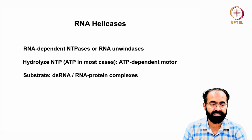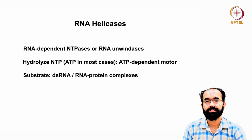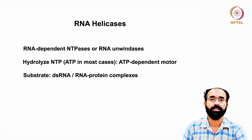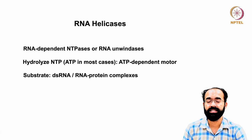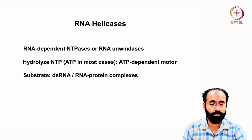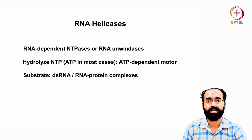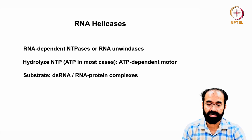RNA-dependent NTPases, or RNA unwindases — the word unwinding gives you an idea that RNA needs to undergo a change in its secondary structure. Sometimes this change is important for it to acquire another secondary structure or get interaction with another RNA. Certain sequences in the RNA that are buried inside the secondary structure need to be exposed, and that function is done by helicases. They hydrolyze NTPs — in most cases ATP — and can be called an ATP-dependent motor. They also act on substrates like double-stranded RNA and RNA-protein complexes.